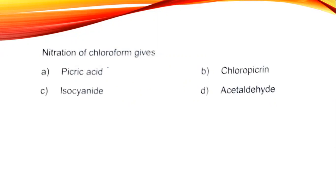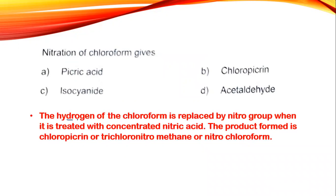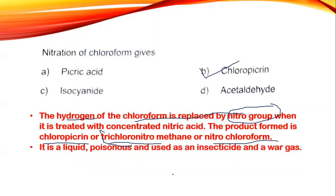Next, nitration of chloroform gives picric acid, chloropicrin, isocyanide, or acetaldehyde. The answer is that the hydrogen of chloroform is replaced by the nitro group, and the product is chloropicrin, also called trichloronitromethane or nitrochloroform. So option B, chloropicrin is the answer. Now let's take a look at its property. It is a liquid, poisonous, and used as an insecticide and a war gas.